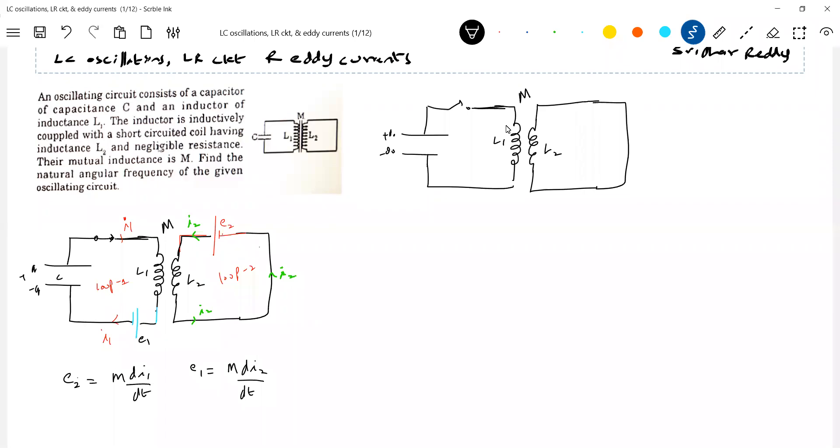Okay, come for this. So let's write loop equation in loop 1: Q by C minus L1 di1 by dt minus E1 equal to 0. This is due to self-inductance, the E1 is due to mutual inductance. So this should be equal to further. What is E1? Should be equal to M di2 by dt.